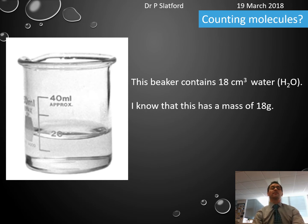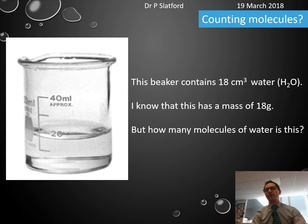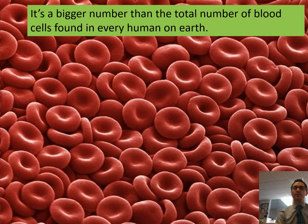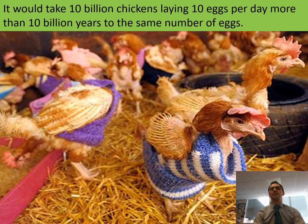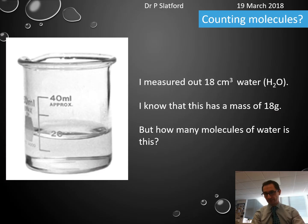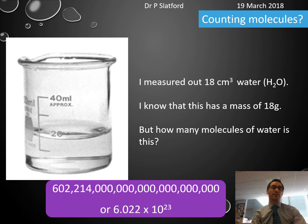Here I've got a beaker of water with 18 cubic centimetres in it, and I know that's going to be 18 grams. But how many molecules is that? It's actually a bigger number than the total number of blood cells found in humans — a similar number to the number of stars in the entire universe. It would take 10 billion chickens laying 10 eggs a day for more than 10 billion years to lay the same number of eggs. The number of molecules in this amount of water is incredibly large: it is 6.022 × 10²³.